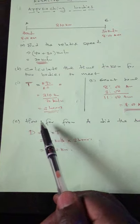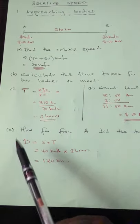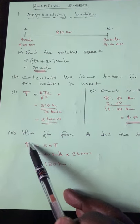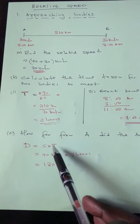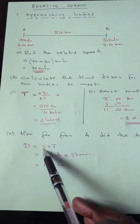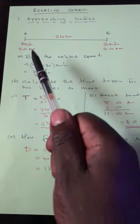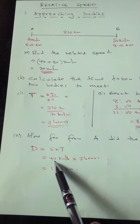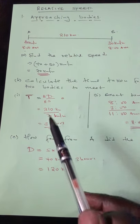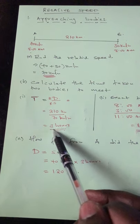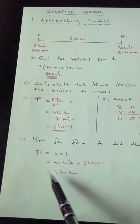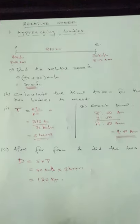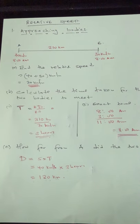Part C: how far from A did the two bodies meet? Distance equals speed times time. The speed from A was 40 kilometers per hour, and the time taken before the two bodies met was 3 hours. So 40 times 3 equals 120 kilometers. This is just the beginning of a long topic with a lot more explanations to come.